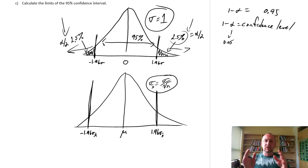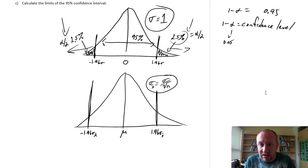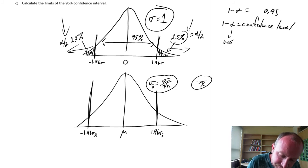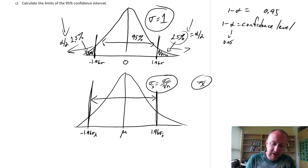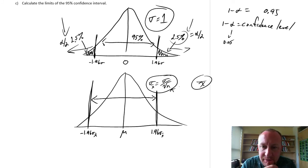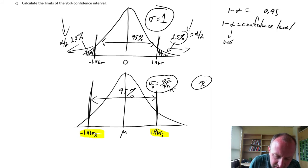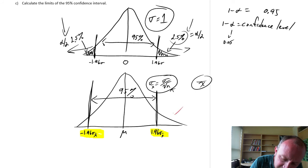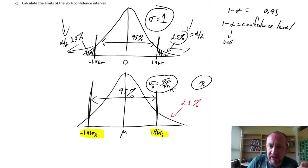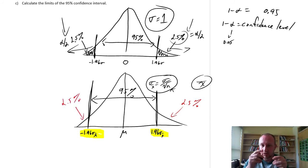Now I have those two values corresponding to my population distribution. What this implies is that if I draw a sample of size n, 95% of the time that sample mean will fall between those two values — within 1.96 standard errors of the mean. There's a 2.5% chance it will exceed the upper limit and a 2.5% chance it will be below the lower limit. We can see how these two distributions are very much connected to one another.